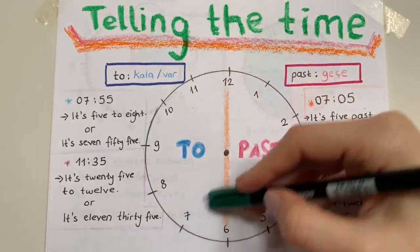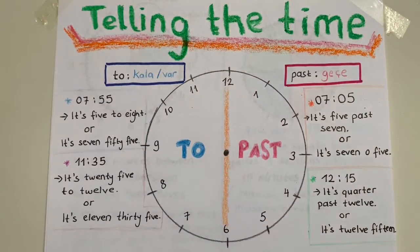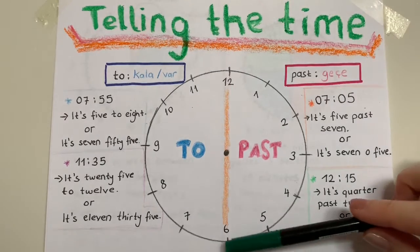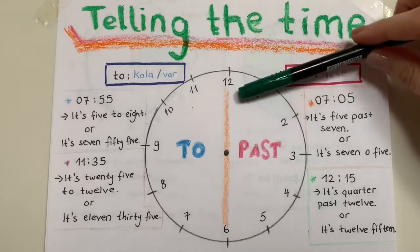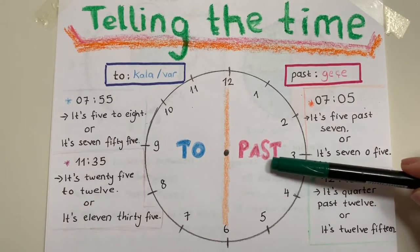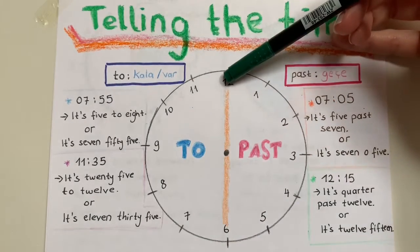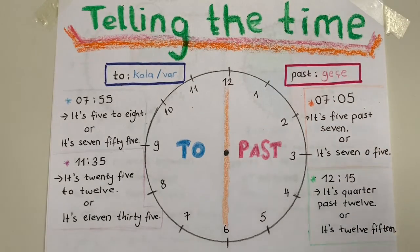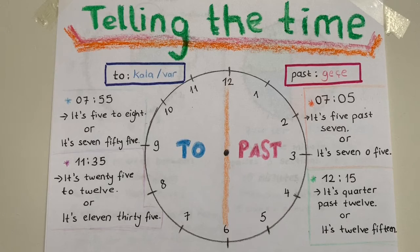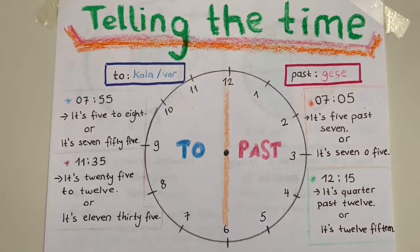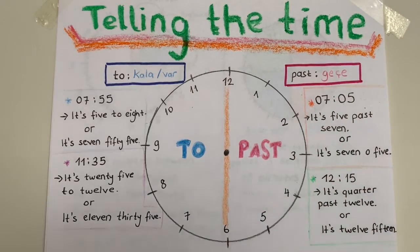then this side is 'to'. Şimdi ben saatimin on ikiden altıya kadar olan aralığında past yani geçe kullanıyorum. Eğer saatim altıdan on ikiye kadar olan aralıktaysa, o zaman da 'to' olarak kullanıyorum. Let's see the examples, örneklere bakalım.